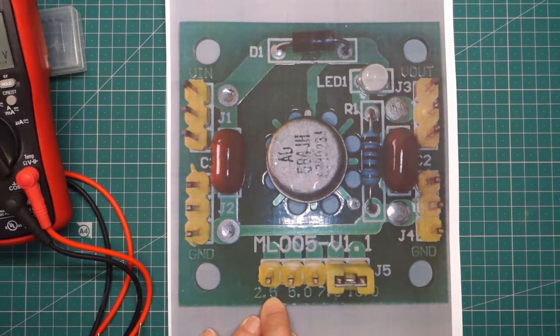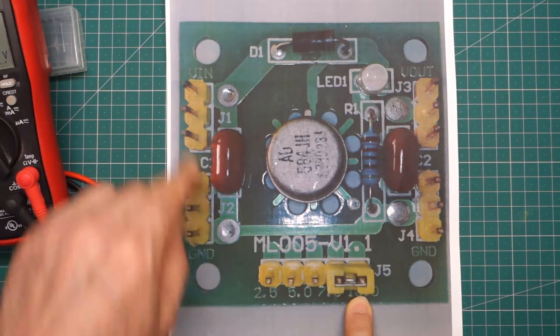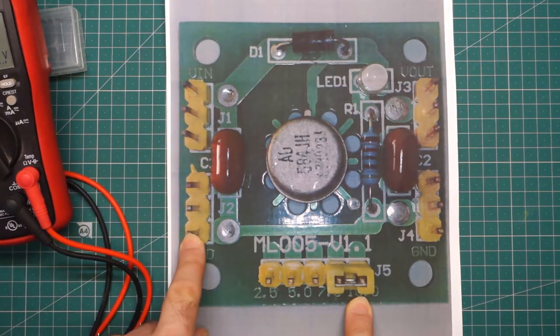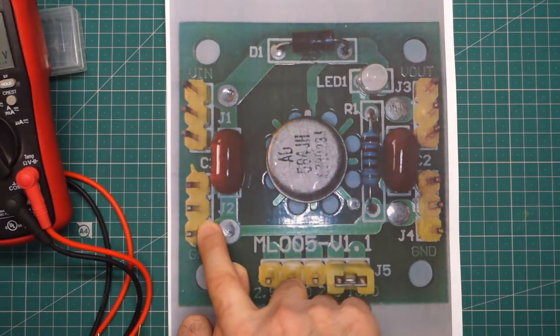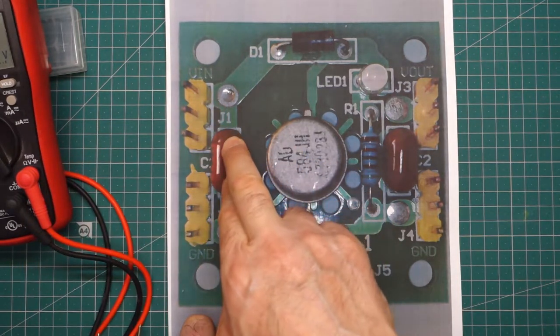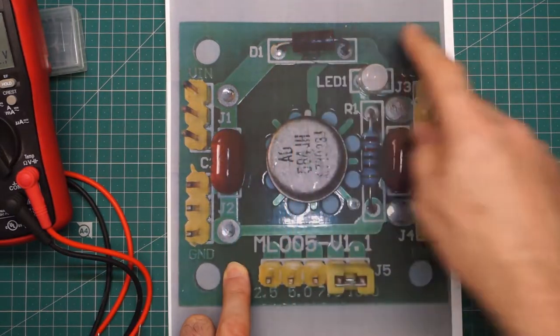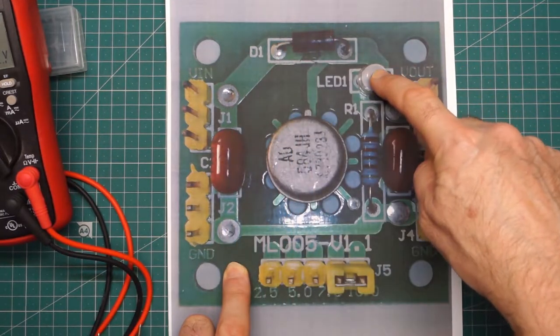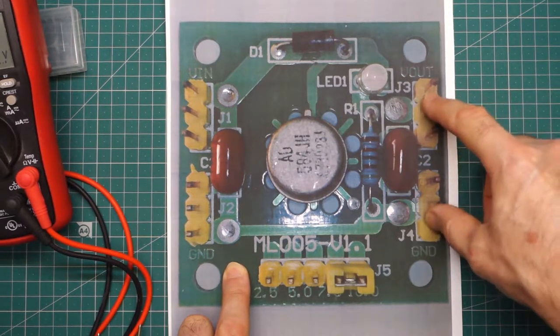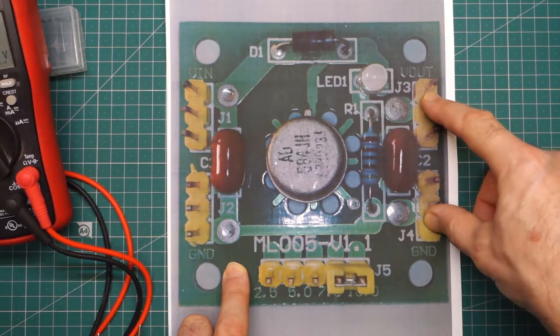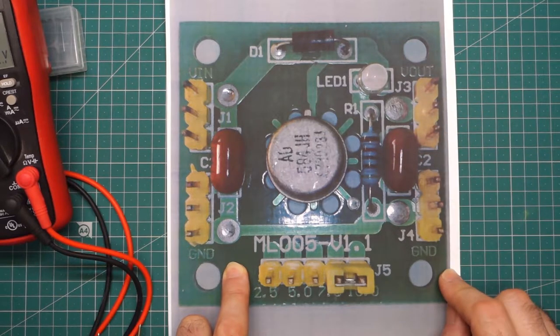And the settings go from 2.5, 5, 7.5 and 10 volts. On the left-hand side of the board, we've got the input, which is VIN plus and ground. Through a decoupling capacitor, a diode, an LED to indicate that the device is on. And then there are the terminals to actually put the digital voltmeter on to test the output. And this is supported again by a capacitor.